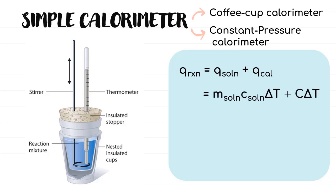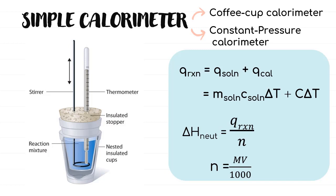For the solution, we use mcΔT since it has a specific volume of solution to be added, while the calorimeter contributes CΔT. Mass of solution is determined by adding the volumes of both solutions and converting to grams, assuming a water density of 1 g/mL. As this calorimeter is used to measure heat in non-combustion reactions such as heat of neutralization and heat of solution, we further calculate enthalpy of reaction using ΔH = Q_reactions ÷ number of moles. Number of moles is determined from the limiting reactant, using n = MV/1000 for solutions.